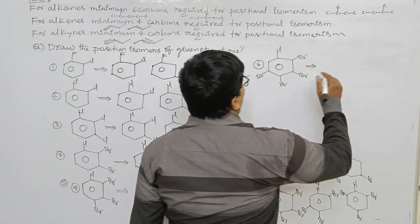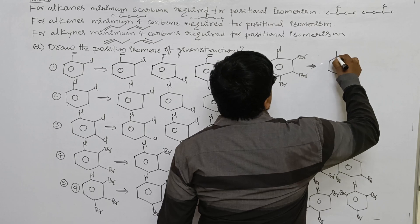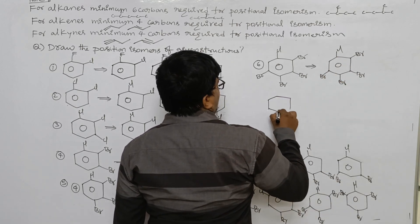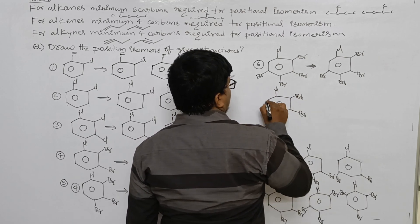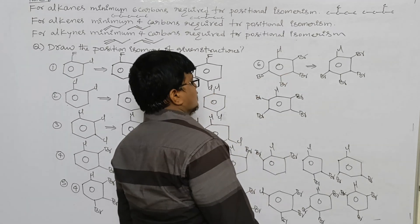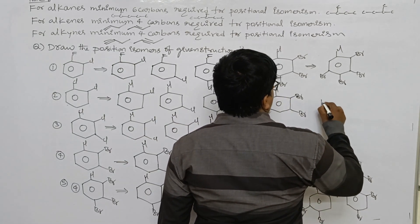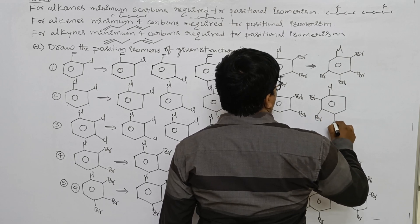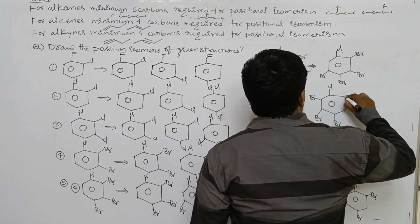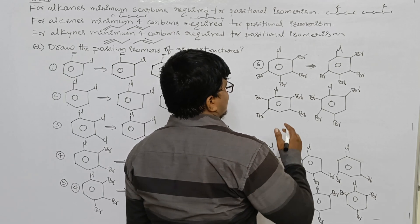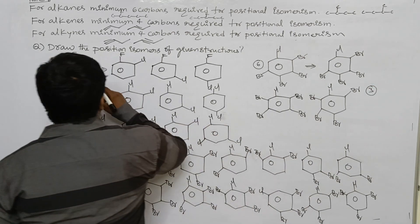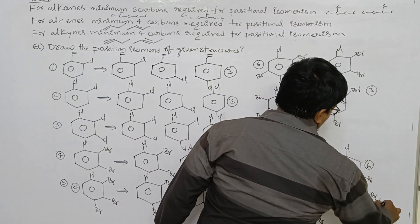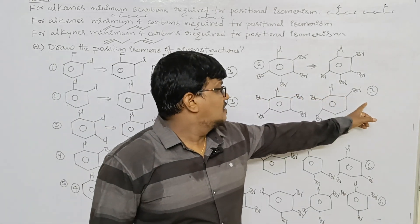For the sixth compound — one chlorine and three bromines on benzene — the arrangements include: 1,2,3; 1,2,4; and 1,3,5 type arrangements by interchanging chlorine and bromine positions. So the sixth compound has only 3 arrangements possible. Summary: the first compound has 3 arrangements, the second has 3, the third has 3, the fourth has 6, the fifth has 6, and the sixth has 3 possibilities.